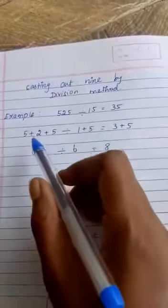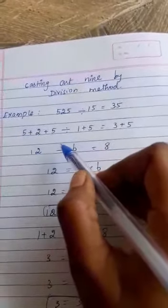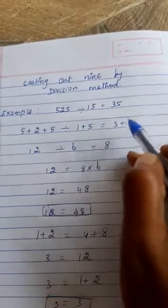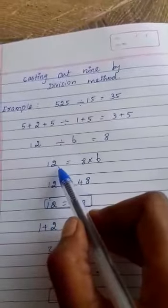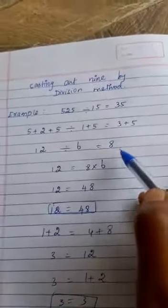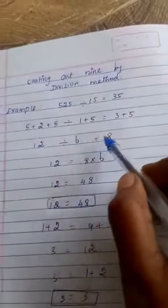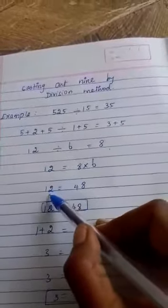You add the values: 5 plus 2 is 7, 7 plus 5 is 12, divided by 1 plus 5 is 6, equals 3 plus 5 which is 8. Now that 12, when the divider goes to the other side it becomes multiplication. So 6 goes to that side: 12 equals 8 times 6.